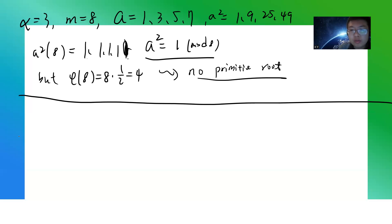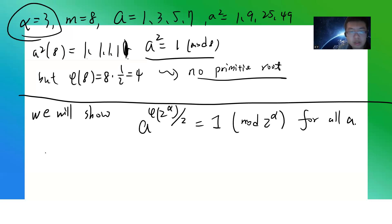Okay, so what we want to do is induction. We will show that a^(φ(2^α)/2) ≡ 1 (mod 2^α) for all a. This is by induction. We already know that α = 3 is correct. So let's assume α is correct.